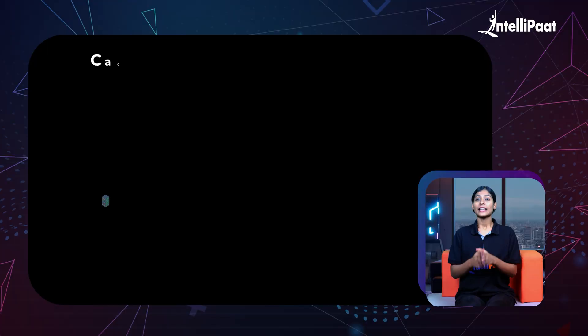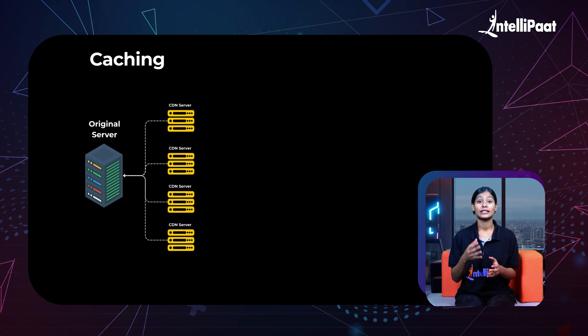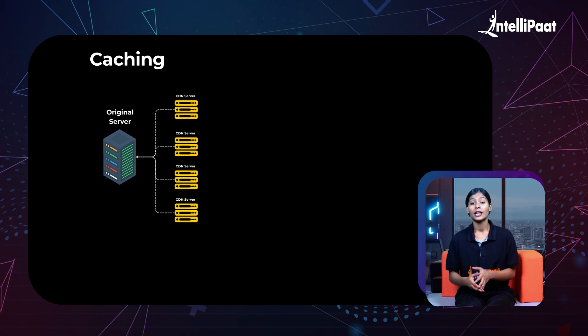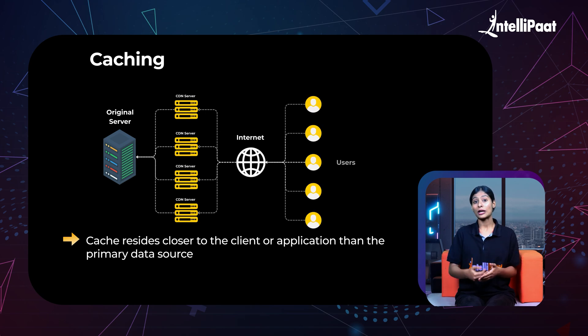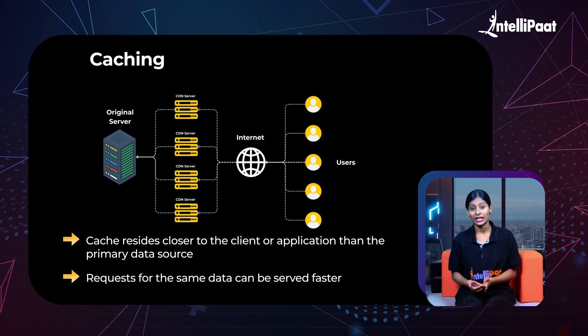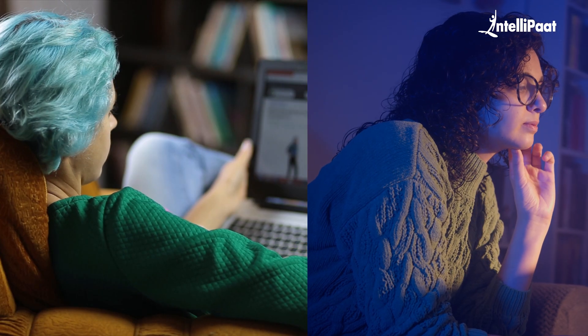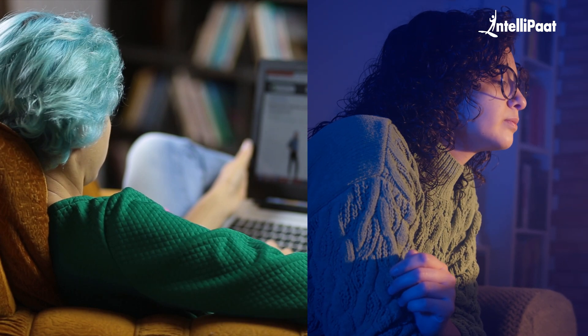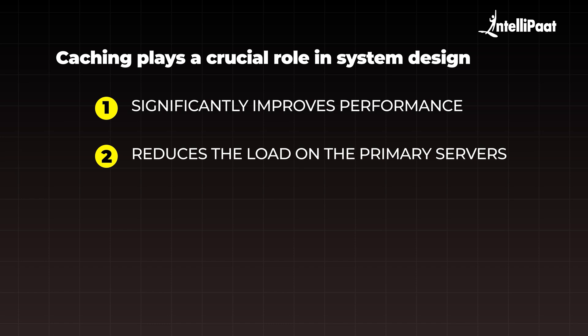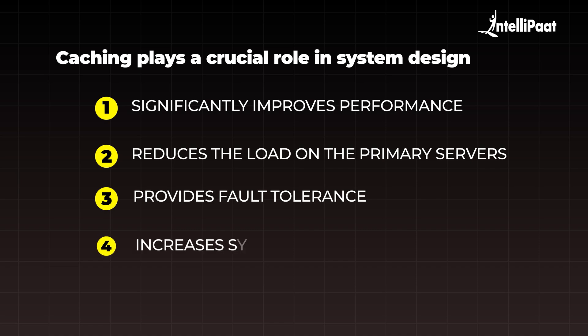Moving on to our fifth question: what is caching and why is it important in system design? Caching is the process of storing frequently accessed data in a temporary storage layer called a cache layer. This cache resides closer to the client or application than the primary data source so that requests for the same data can be served faster. Caching significantly improves performance — for example, a user in Mumbai and a user in Germany can both access a website located in India at the same time. Caching also reduces the load on primary servers and provides fault tolerance by serving as a backup if the primary server becomes temporarily unavailable.